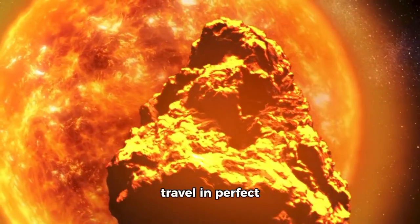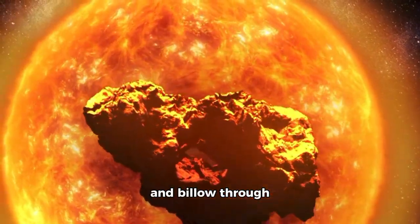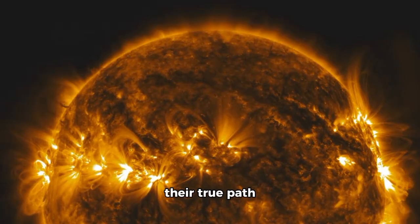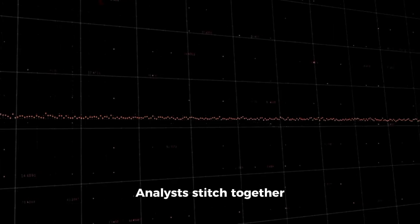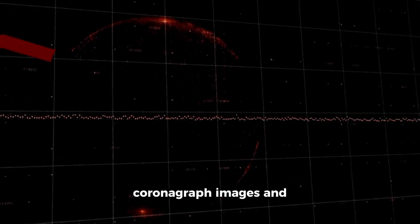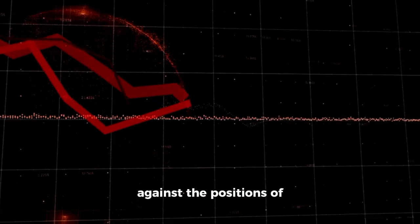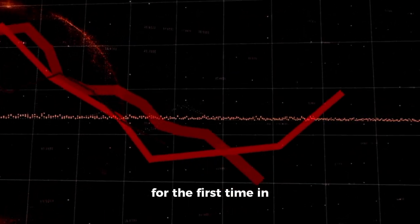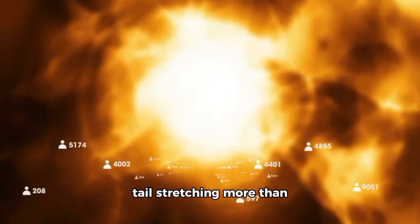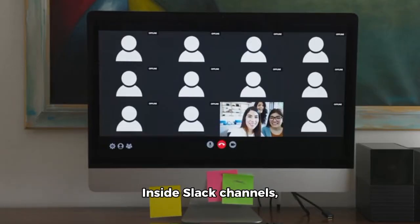Solar ejections don't travel in perfect lines. They twist and billow through the solar system, their true path shaped by magnetic fields and solar rotation. Analysts stitched together coronagraph images and real-time solar wind readings, plotting the shock front of the CME against the positions of planets, satellites, and, for the first time in years, a comet with a tail stretching more than two degrees across the sky.